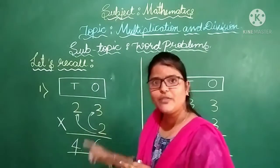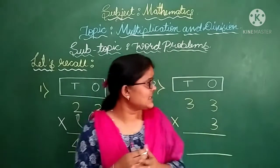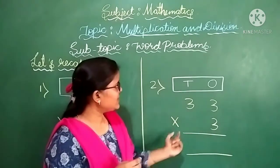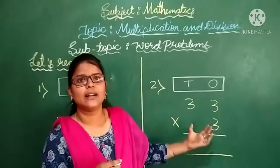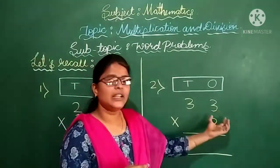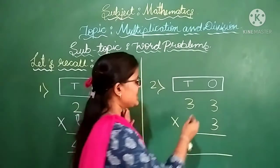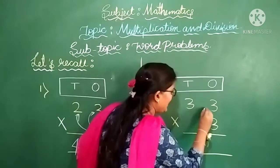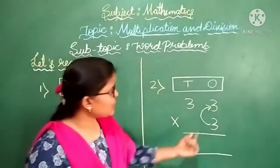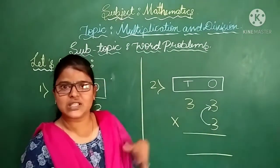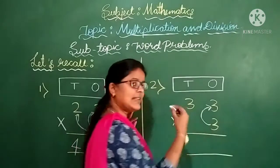This is all about our first question. Now let us move on to the second question. Here we read the question as 3, 33s are dash. How to do this multiplication? First you have to multiply the 1s place numbers first.